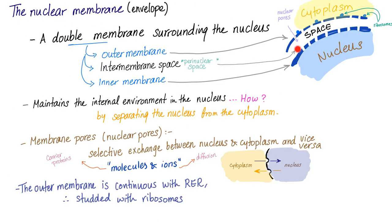The nuclear membrane is an envelope surrounding the nucleus. It's a double membrane because any membrane in your body is a double membrane. So, it has an outer membrane, inner membrane, and an intermembrane space called the perinuclear space. It maintains the internal environment of the nucleus. How? By separating the nucleus from the cytoplasm. Cool.